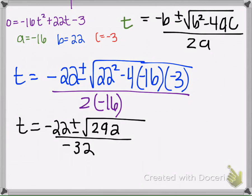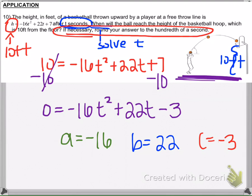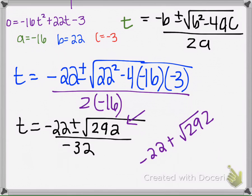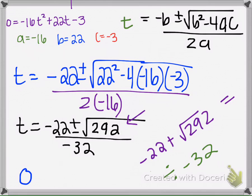Once we simplify, we get 292 inside the radical. Since the directions say to round to the nearest hundredths place, I don't need to simplify the radical — I just put it in my calculator. Enter: negative 22 plus the square root of 292, then equals, then divided by negative 32. Your calculator should give you 0.15.